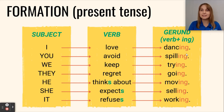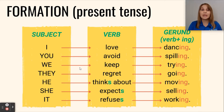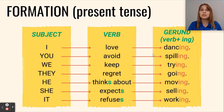Full sentences sound like this: 'I love dancing,' 'you avoid spilling,' 'we keep trying,' 'they regret going,' 'he thinks about moving,' 'she expects selling,' 'it refuses working.' These forms — love dancing, avoid spilling, keep trying, and so on — are called gerunds.